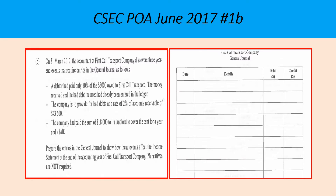Part B: On 31st March 2017, the accountant at First Call Transport Company discovered three year-end events that require entries in the general journal. We are to prepare the entries in the general journal to show how these events affect the income statement at the end of the accounting year of First Call Transport Company. Narratives are not required.